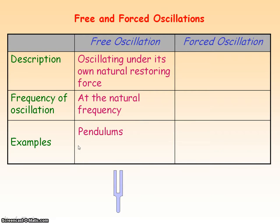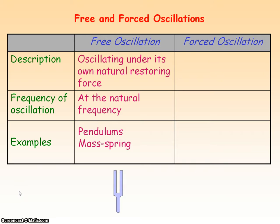An example would be a simple pendulum. If we displace the pendulum from its equilibrium position and release it, it will oscillate freely under its own natural restoring force, which is due to gravity. Another example would be a mass on a spring. If we displace the mass from the equilibrium position and release it, it would oscillate freely due to the natural restoring force — the tension in the spring.